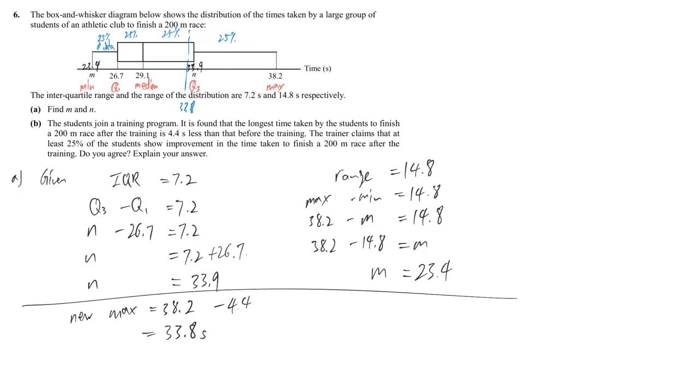So which means that at least no matter this one improve or not, but this quarter, this 25% student, improved and spend less time than 33.9 at this moment. So we have to say very clearly.